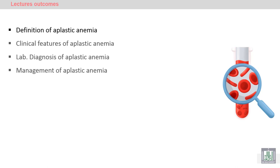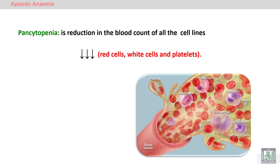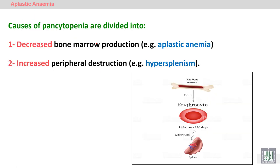Aplastic anemia — we will take the clinical diagnosis, laboratory diagnosis, and finally the management. Aplastic anemia is characterized by the presence of pancytopenia, which is a reduction of all blood cells: red blood cells, white blood cells, and platelets. This occurs here due to a decrease in the production in the bone marrow. This decrease in bone marrow production is what is called aplastic anemia.